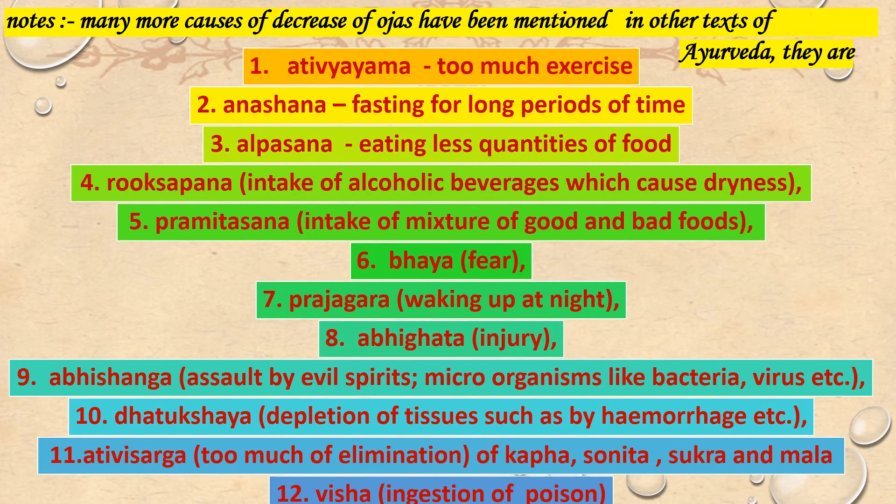Note: Many more causes of decrease of Ojas have been mentioned in other texts of Ayurveda. They are Adhivyayama (excessive exercise), Anashana (fasting), Alpashana (eating less), Rukshapana (intake of dry food), Pramidasana, Bhaya (fear), Prajagara (sleeplessness), Abhigata, Abhishanka, Dhatukshaya, Adhi, Visarga, and Vishaya.